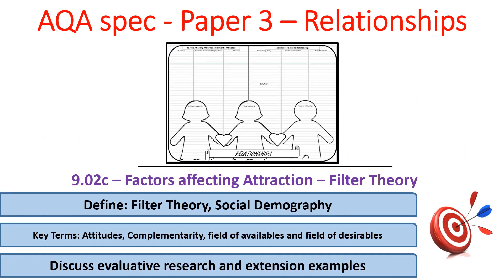Hello and welcome to PsychBoost. This is the third video in the Factors Affecting Attraction series. In this video we'll be looking at filter theory. We'll also be defining social demography and covering key terms such as attitudes, complementarity, field of availables, and field of desirables. As always, I'll give you some ways to extend your evaluation if you had to write about filter theory in an essay.